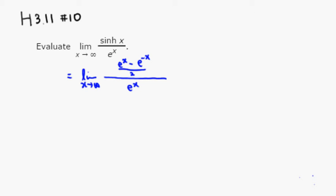If you simplify that, you're going to get limit as x approaches infinity. There's over 2, so I'm going to put the 2 on the bottom. E to the x divided by e to the x is 1. There's a negative sign. E to the negative x minus e to the x is e to the negative 2x.